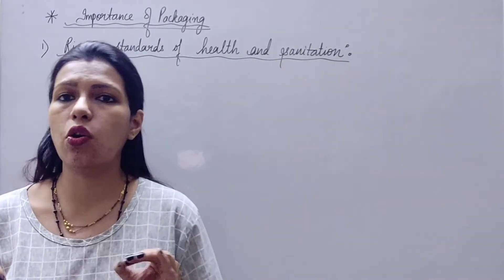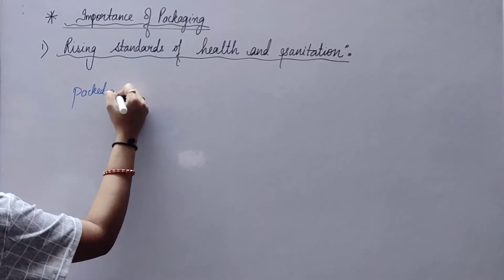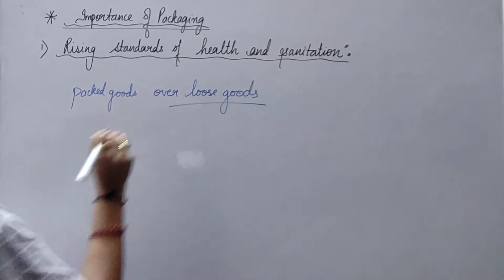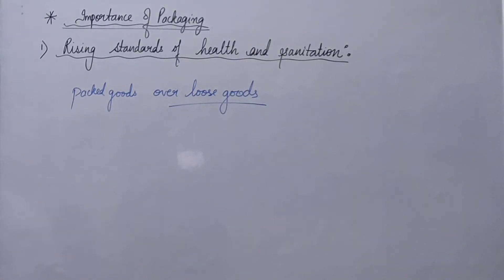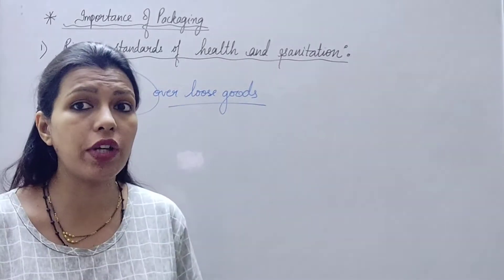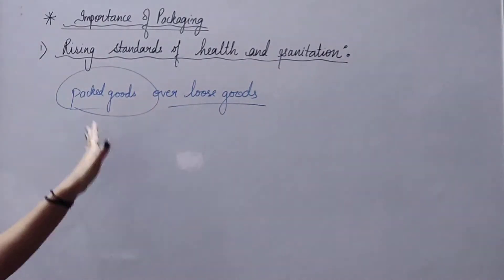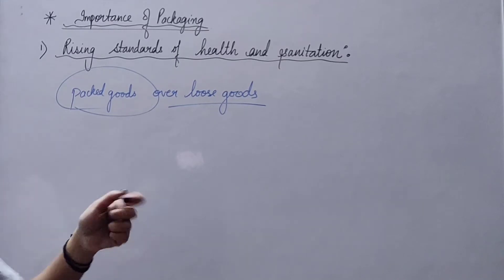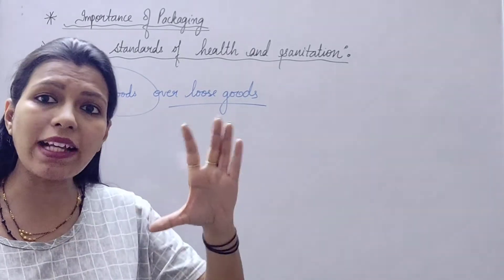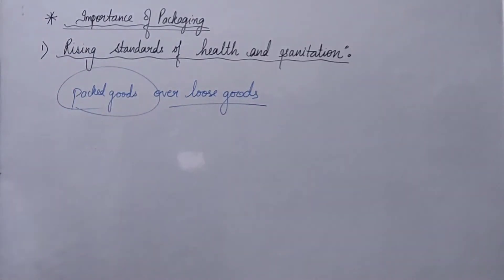When people are more aware and alert about health, most people now prefer packed goods over loose goods. For example, earlier people used to drink water directly from restaurants, but now they prefer packed drinking water bottles. Similarly, people used to buy loose rice and sugar, but now we prefer packed goods over loose goods.